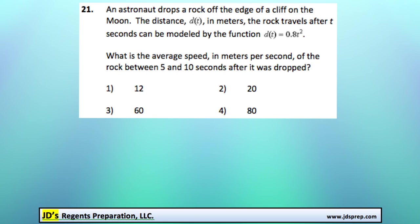Welcome to problem number 21 from the January 2015 Algebra Regents exam. In this question, we've got an astronaut that's dropping a rock off the edge of a cliff on the moon.